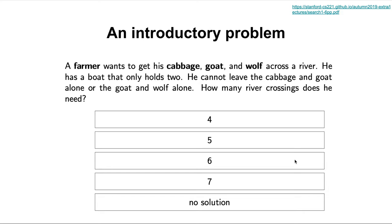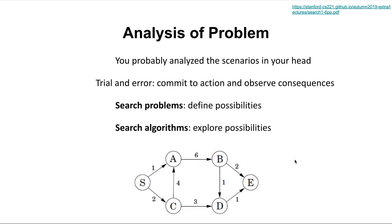The consequences could be: everything's okay, keep moving — or this failed, because maybe we left the cabbage and goat together, or the goat and wolf together. Then you have to restart. There's a process: you try different possibilities, observe the action and consequences, and based on that you modify the next possibility you're going to choose. This behavior that even humans do can be expanded to search algorithms.